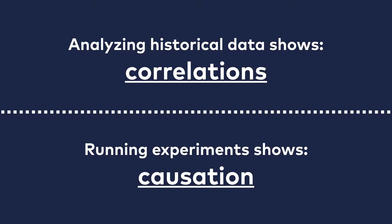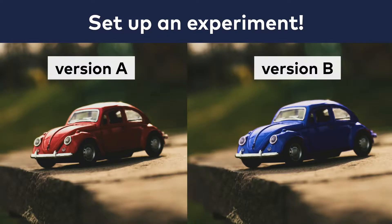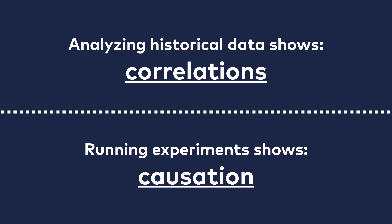By using experiments. For instance, you take 10,000 random people, give half of them red cars and the other half black cars, and ask them to use those cars for a year. After a year, you check how many were involved in car accidents. If red cars in your experiment were involved in a significantly higher number of accidents, then you can finally conclude that the color red is indeed a major factor. By running an experiment, you can discover more than a correlation — you will see causation too.